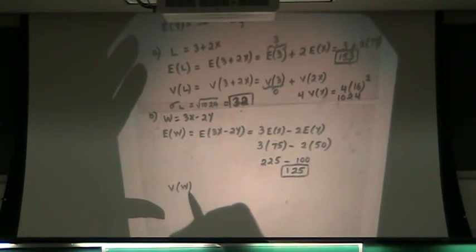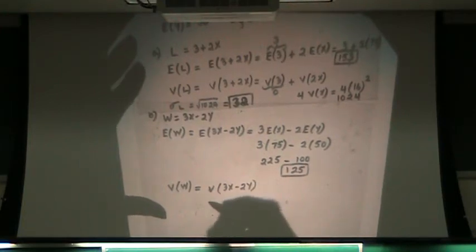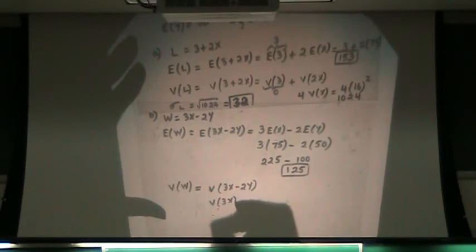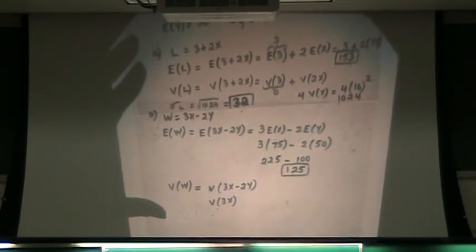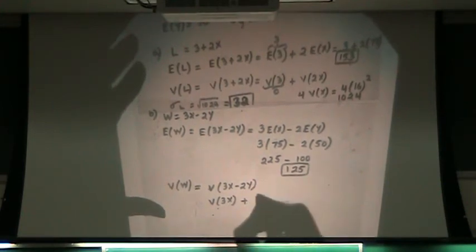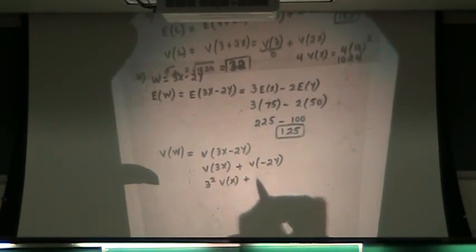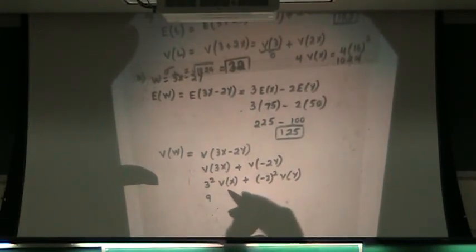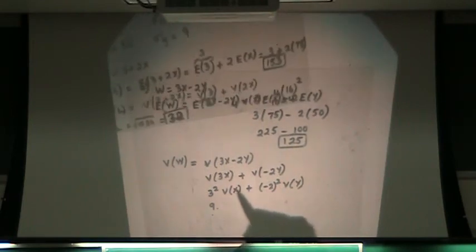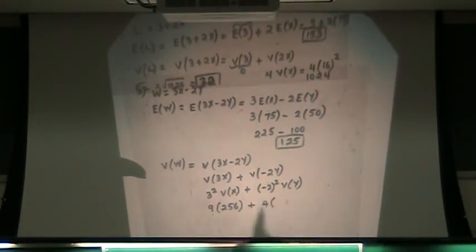Next I want variance of W. Variance of W is variance of 3X minus 2Y. These are independent random variables X and Y, so there won't be any covariance term. So it's variance of 3X plus variance of minus 2Y, which is 3 squared times variance of X plus negative 2 squared times variance of Y: 9 times 256 plus 4 times 81.